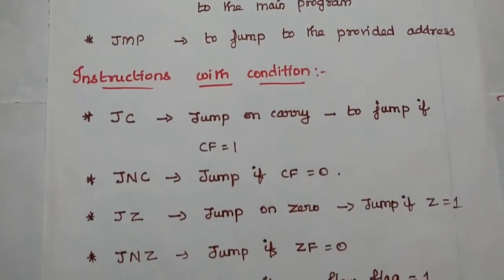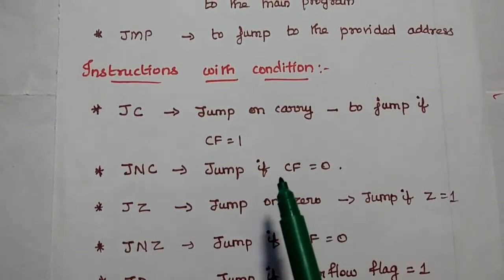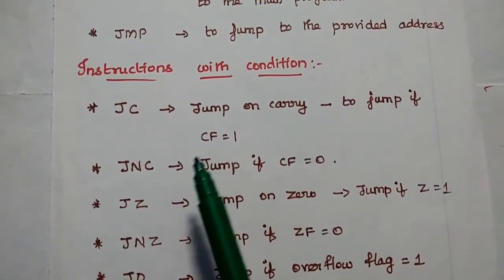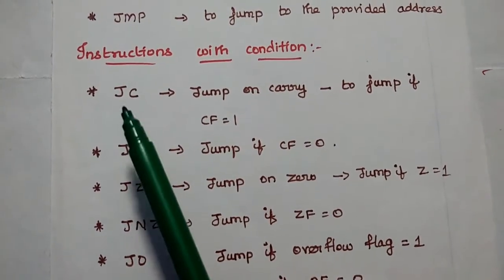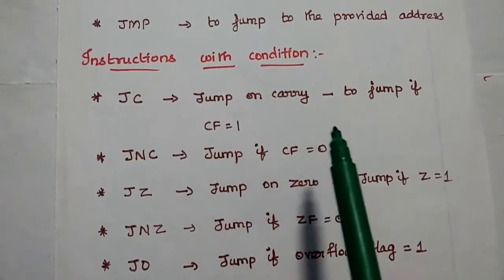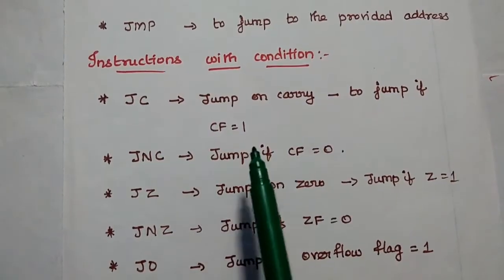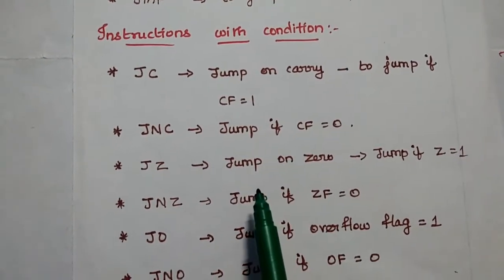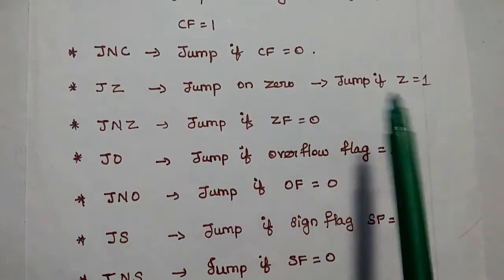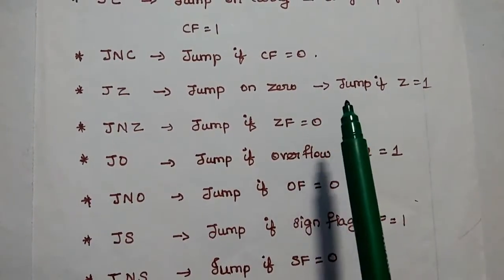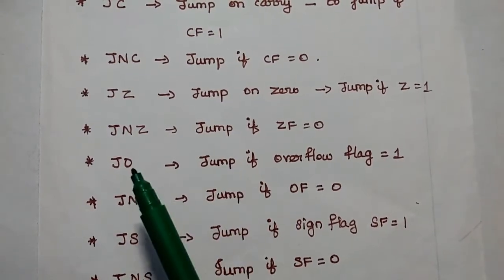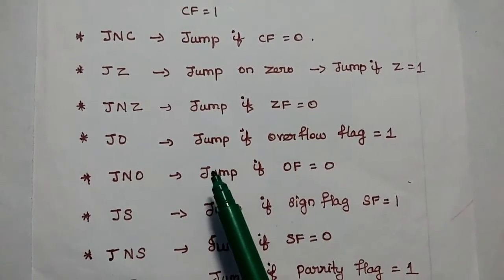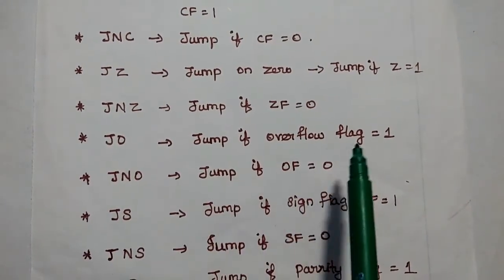Next are instructions with condition. We check a condition — if the condition is satisfied, the program execution is transferred to the given address. Different conditional jumps: JC — Jump on Carry (jumps to the new address if the carry flag is set to 1). JNC — Jump on No Carry (jumps if carry flag is 0). JZ — Jump on Zero (jumps if zero flag is 1). JNZ — Jump on No Zero (jumps if zero flag is 0). JNO — Jump if overflow flag is 0.